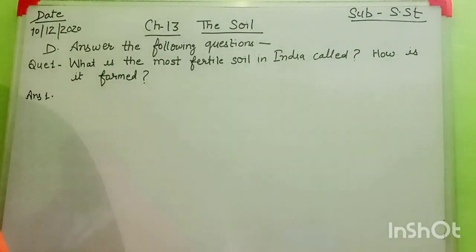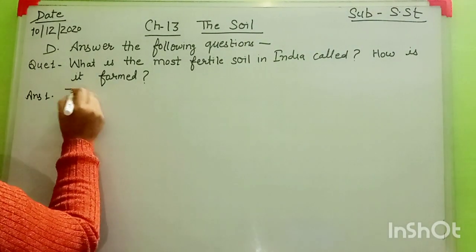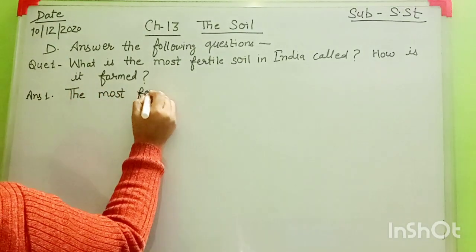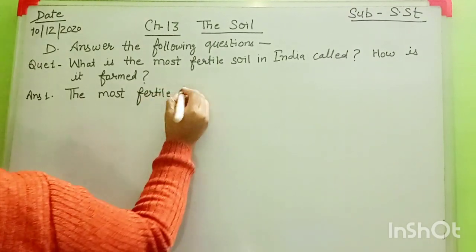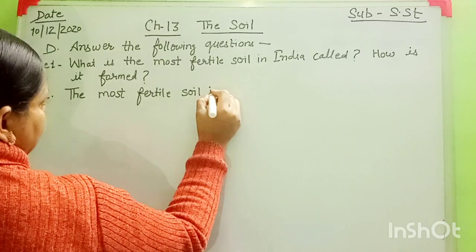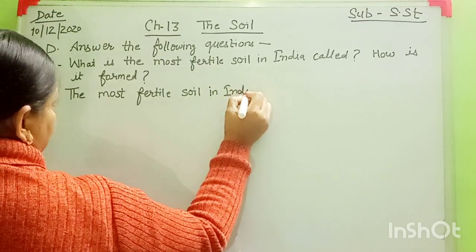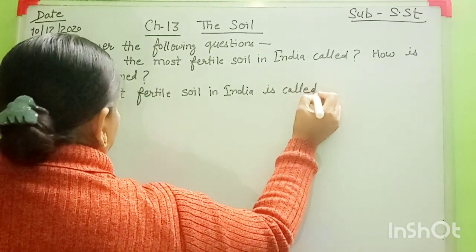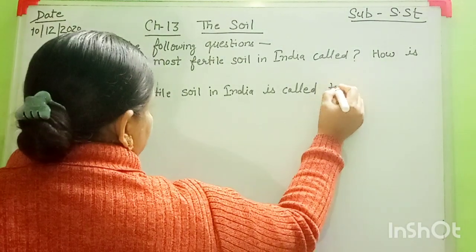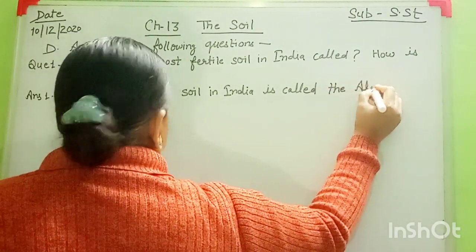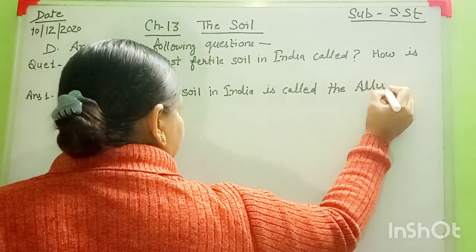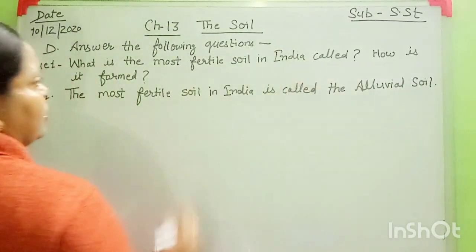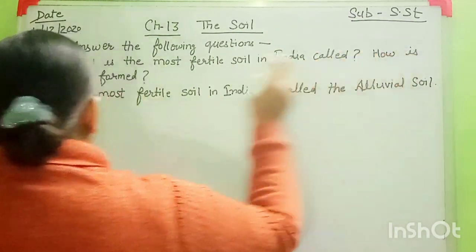Write now, everyone: 'The most fertile soil in India is called the alluvial soil.' First question is completed now. Its second part is: How is it formed?